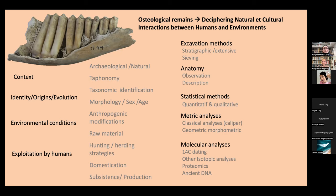Once we know where this bone has come from, we can work on other aspects: the identity, origin, and evolution of this animal — including specific identification, morphology, sex, age, and environmental conditions. We can learn whether there have been anthropogenic modifications, if the bone was used as raw material for a tool or object, and how people exploited these bones — whether from hunting or herding, and what it tells us about domestication and subsistence practices.